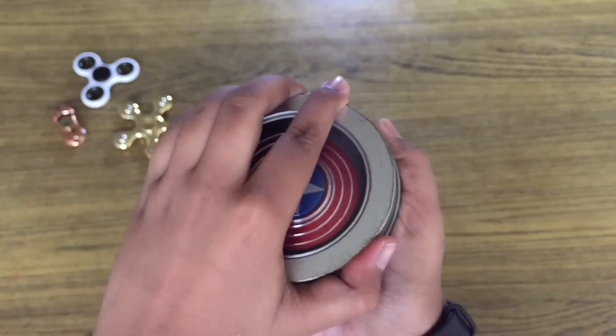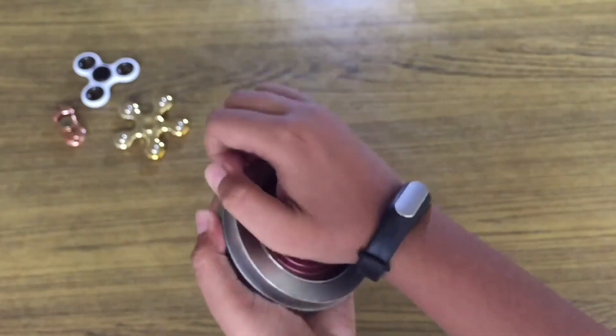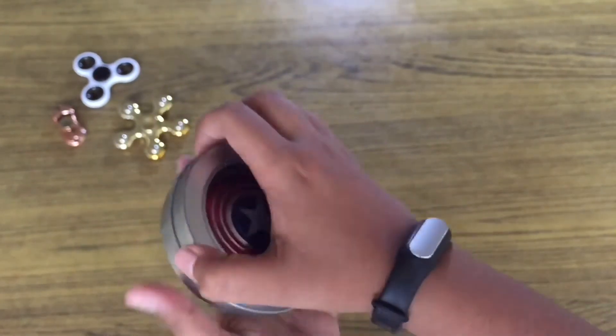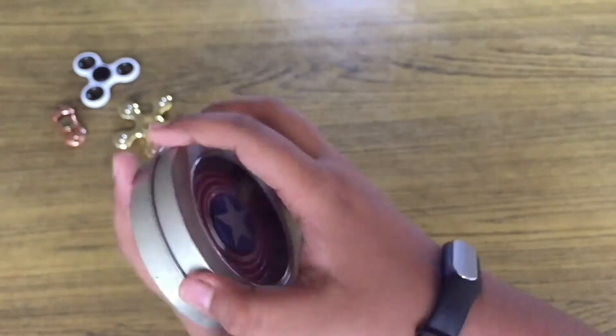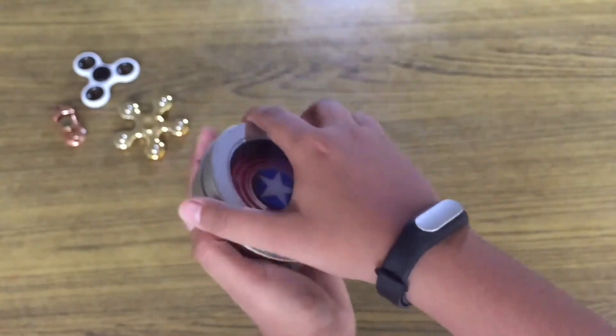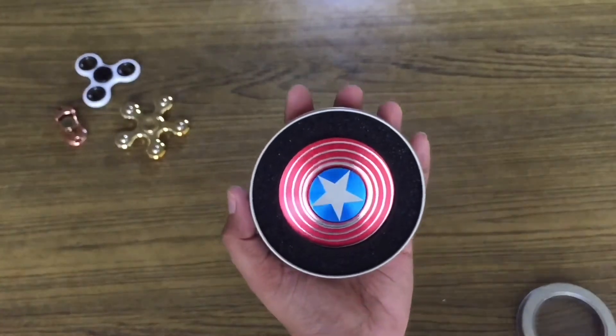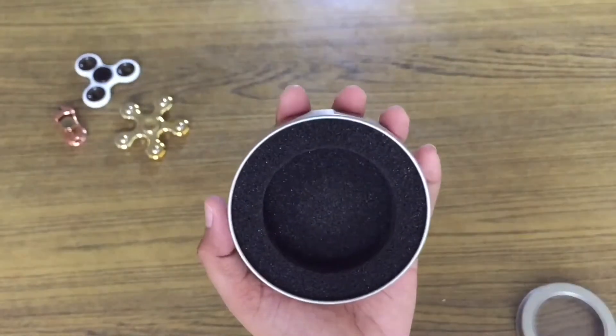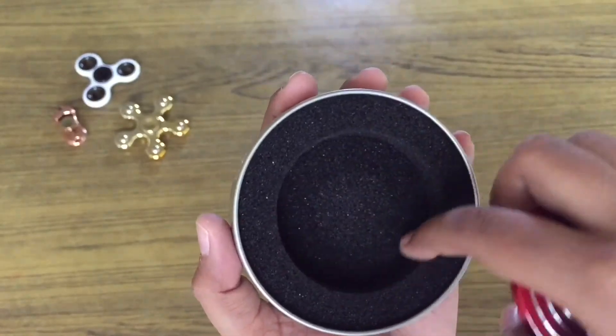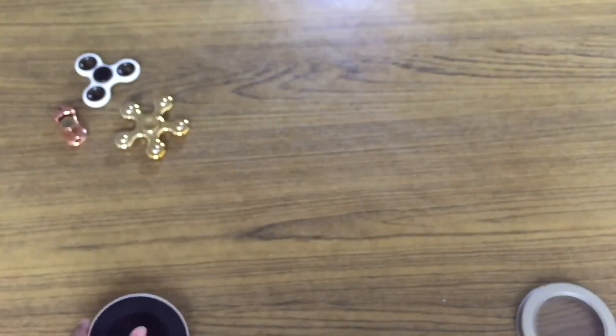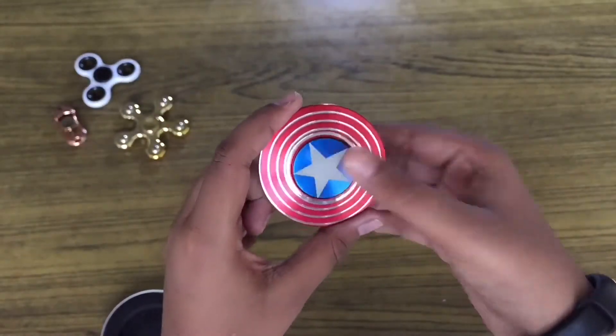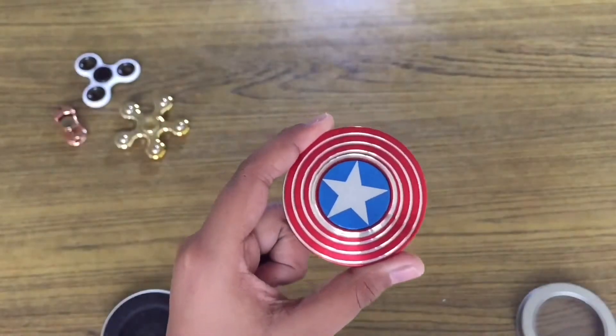It comes in a steel box and it's really tight, so be careful when closing this. Let's open it up. Okay, so as you can see, this is the Captain America shield spinner. There are foam grips so that it doesn't just wobble around in the box and make noise.